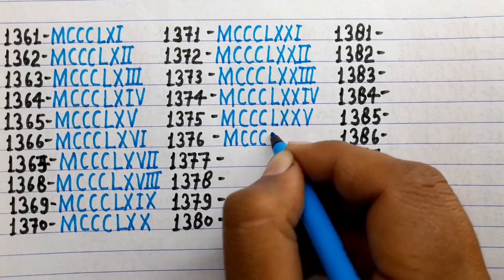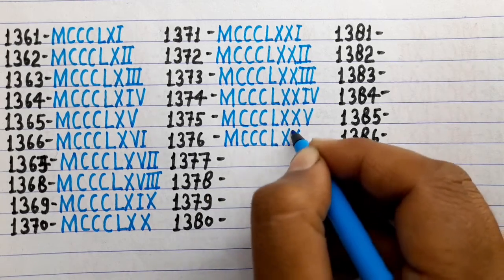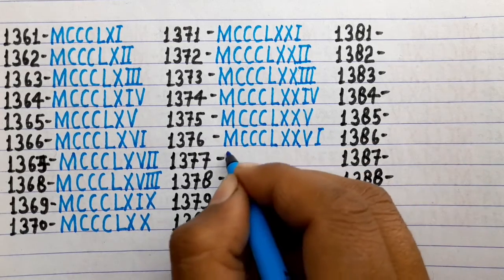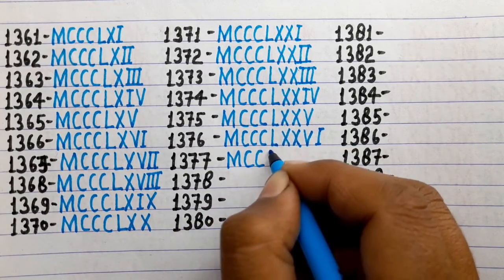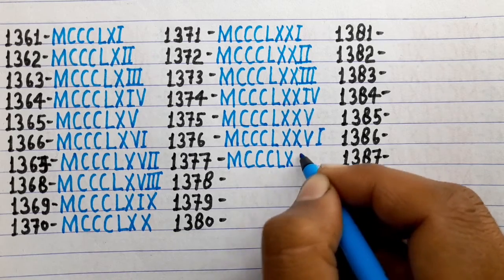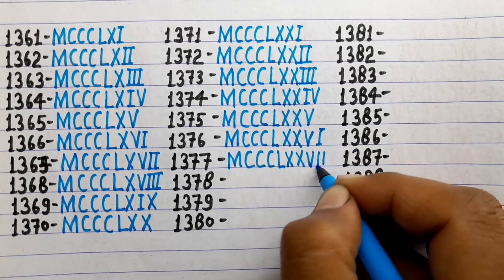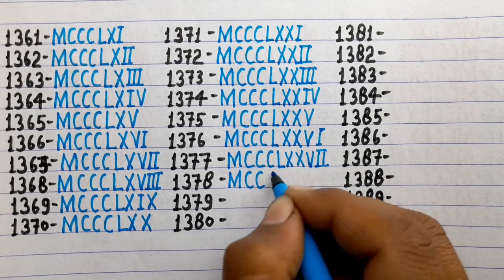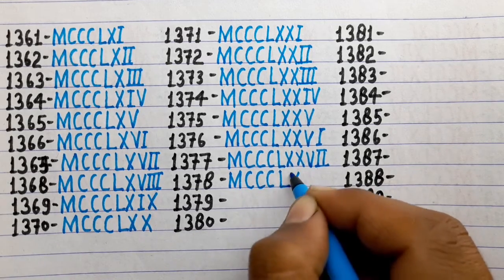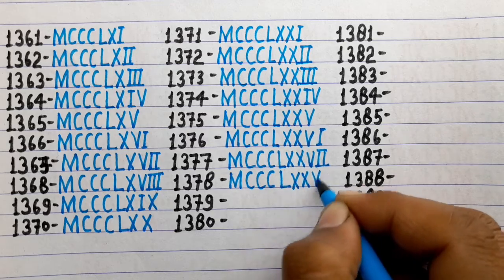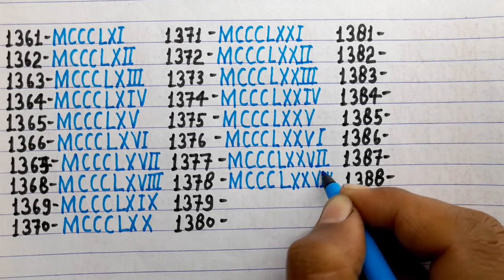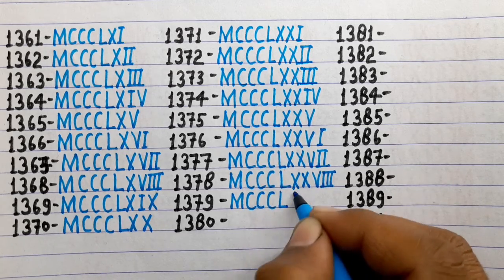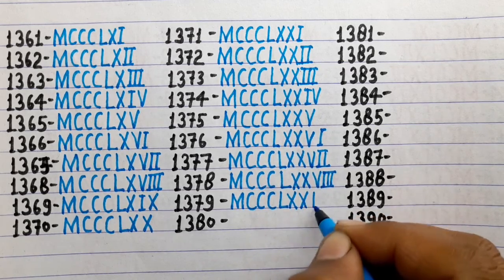1376 is MCCCLXXVI. 1377 is MCCCLXXVII. 1378 is MCCCLXXVIII. 1379 is MCCCLXXIX.